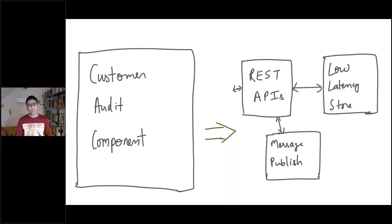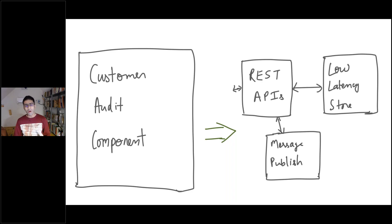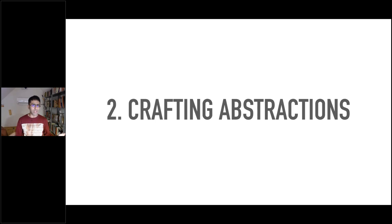I could have also come up with other abstractions — instead of three components, maybe five, two, or even just one. So how do I know if abstractions are right? How do I know which ones are good and which ones are bad? That's what I'm going to talk about next. Defining abstractions involves a lot of craft that you learn over a period of time. With that, let's talk about the next section — crafting abstractions — and how to figure out and build the right abstractions.